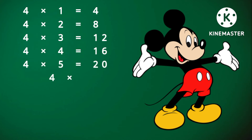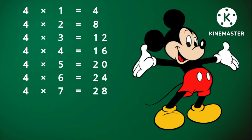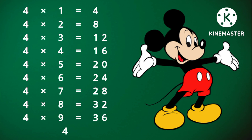Four fives are twenty, four sixes are twenty-four, four sevens are twenty-eight, four eights are thirty-two, four nines are thirty-six, four tens are forty. Thank you.